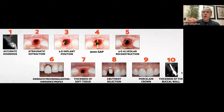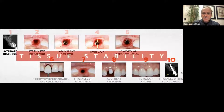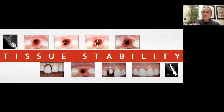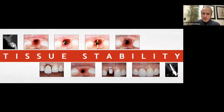What's our main goal of using the IDR technique? This is the main goal: to look for tissue stability. Tissue stability means to leave the outline of the gingival margin and the papillary height in its original position.